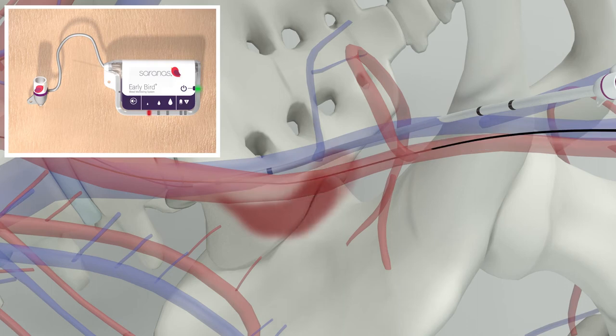As blood begins to accumulate during a bleed, a drop in the bioimpedance level is detected by the Early Bird.